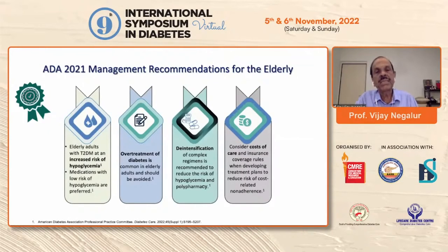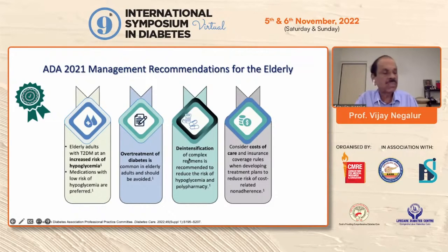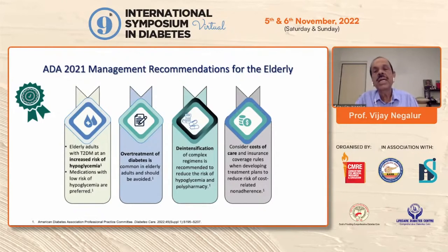The American Diabetes Association had similar recommendations: the risk of hypoglycemia is pretty high, so be careful. Overtreatment in diabetes is commonly seen in elderly patients, and polypharmacy with drug-drug interactions is a concern. De-intensification is very important, especially in complex regimens, to reduce the risk of hypoglycemia. Also consider the cost of therapy, as most of these patients are living alone and spending out of pocket.